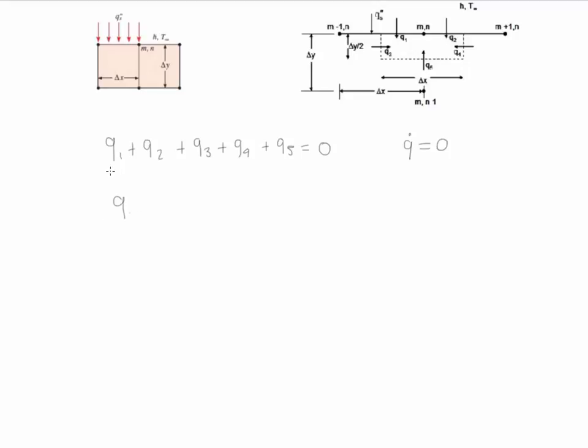Let's start with Q1. Q1 in this case is the value of the flux times the area that it crosses, delta X divided by 2 times the thickness 1.